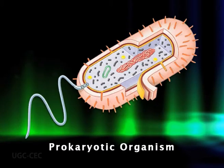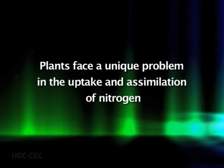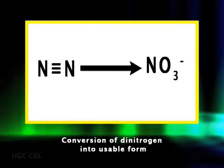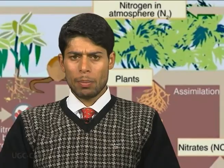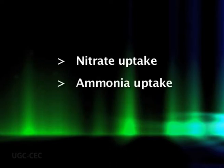Only certain prokaryotic species are able to carry out this important reaction. This situation presents plants with a unique problem with respect to the uptake and assimilation of nitrogen. Plants thus depend on prokaryotic organisms to convert atmospheric dinitrogen into a usable form. The uptake and assimilation of nitrogen occurs through phases like nitrate uptake and ammonia uptake.